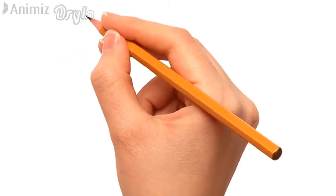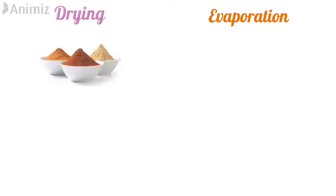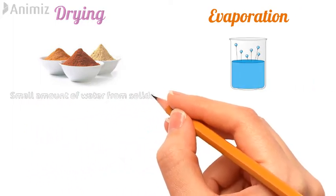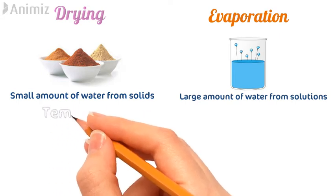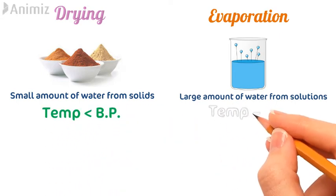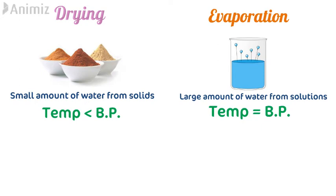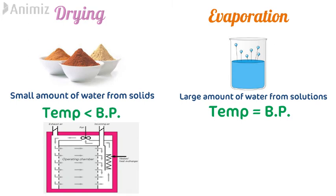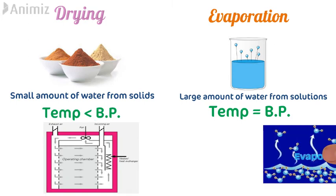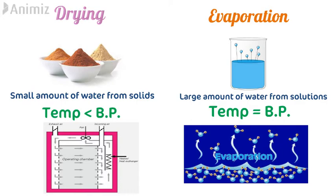Now let's see the difference between two confusing terms — drying and evaporation. Drying is carried out on solid materials like powders, whereas evaporation is carried out on liquid materials such as solutions. In drying, only a small amount of water is removed from the solids, whereas in evaporation a large amount of water is removed from the solutions. Drying takes place at a temperature below the boiling point of water, whereas evaporation takes place at a temperature close to its boiling point. In drying, water is usually removed by circulating air over the material, while in evaporation water is removed as pure water vapors.